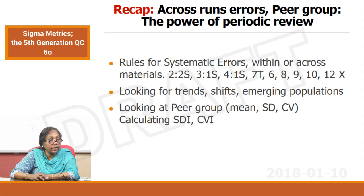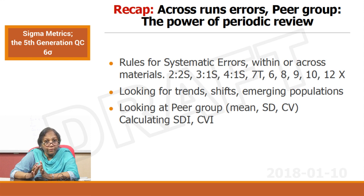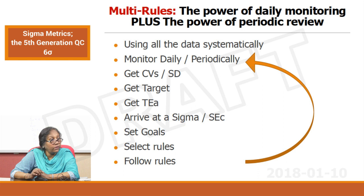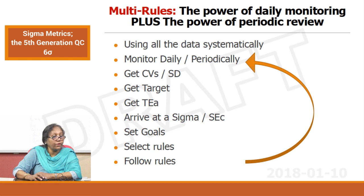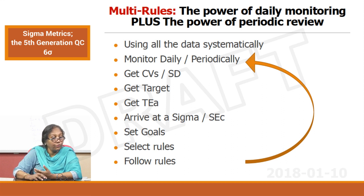Across run errors — the power of periodic review — your peer group — these are the power of the periodic review. Look for systematic errors like 2-2S, 3-1S, 4-1S, 7T, and all these rules. Look for trends, shifts, emerging populations, and look at the peer group mean, SD, CV, and CVISDI — we will discuss it in the next video. The power of multi-rules is actually the power of daily monitoring plus the power of periodic review. A few steps to keep in mind: use all data systematically, monitor daily and periodically, get CVs and SDs, get target data from the peer group, get the total allowable error, arrive at a sigma metric, set goals, select rules, and follow rules.